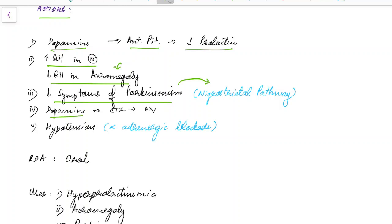Dopamine acts on the chemoreceptor trigger zone and causes nausea and vomiting. Bromocryptin, being a dopamine agonist, has similar effects. Bromocryptin also causes hypotension due to alpha-adrenergic blockade.